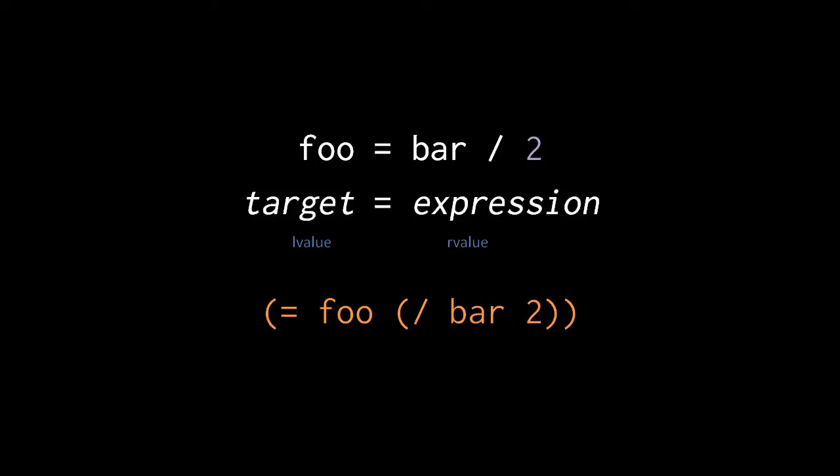In the JavaScript specification, targets of assignment are called L values, in contrast to normal expressions which are called R values. The L and R stand for left and right, as in the left and right side of the assignment operator. L values are things which can go on the left side of the assignment operator. R values are things which can go on the right.